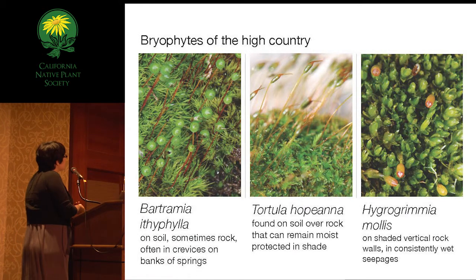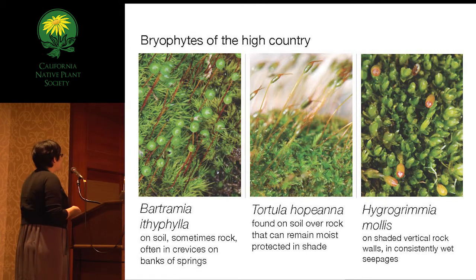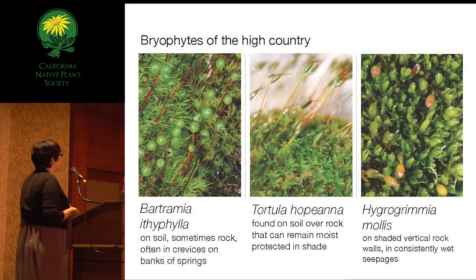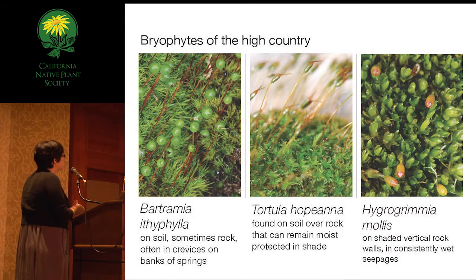Some bryophytes of higher elevations—all common to very wet places. Atramia epiphylla is found on rock, soil in crevices, or on stream banks; all mosses in this family have a very rounded sporophyte. Tortula habiana can be found on rock or soil over rock in moist, shaded places such as under a boulder. Hygrohypnum mollusca can be found in wet rock seepages.